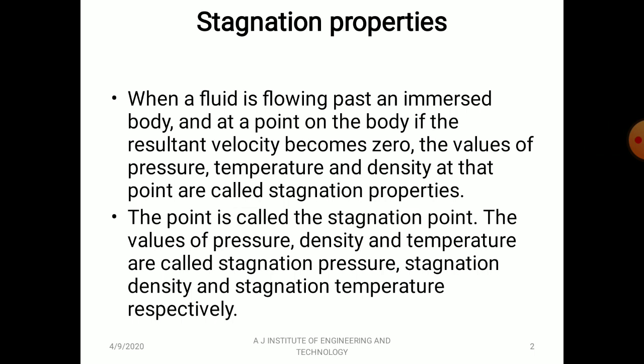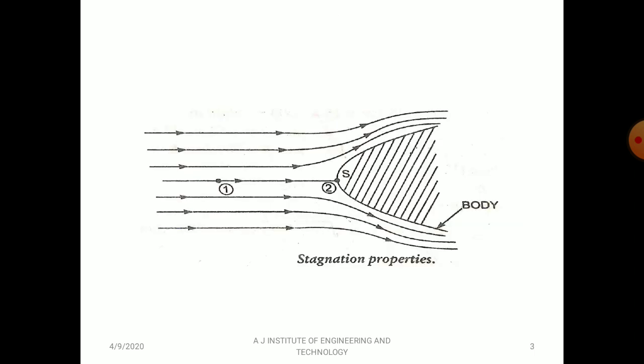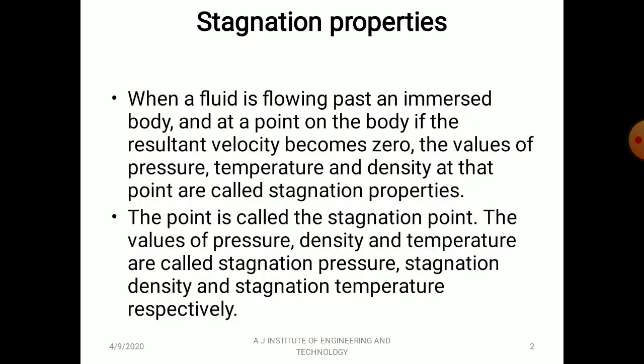When a fluid is flowing past an immersed body and at a point on the body the resultant velocity becomes zero, the values of pressure, temperature, and density at that point are called stagnation properties. This is similar to flow of fluid over a flat plate, where the velocity at the stationary plate is zero due to the no-slip condition. When the resultant velocity becomes zero at a point on the body, that is called the stagnation point.